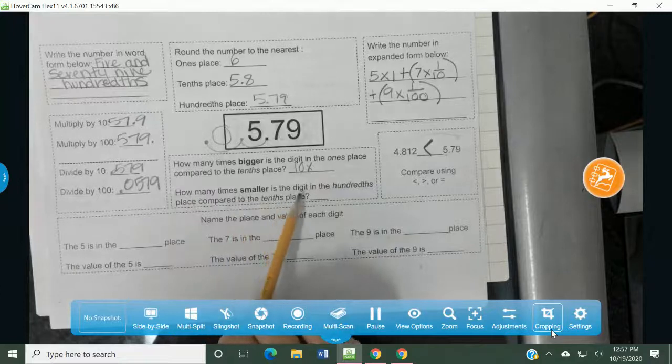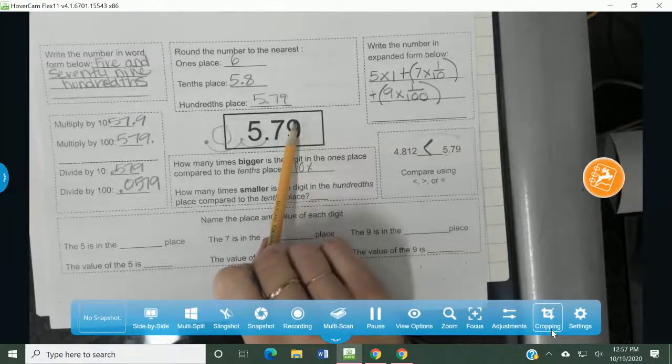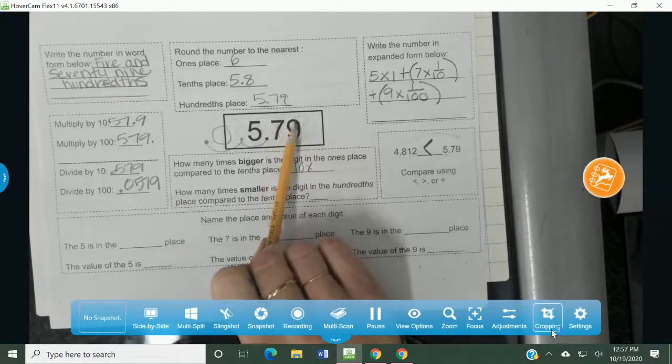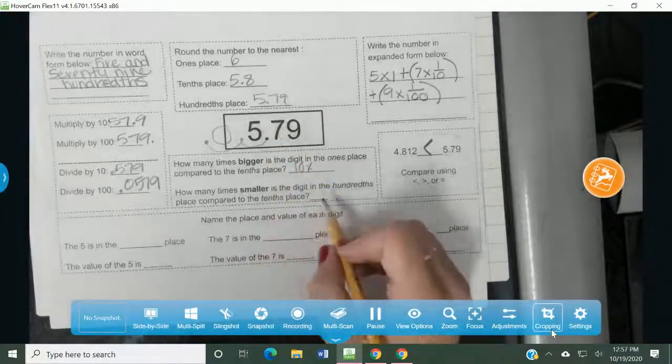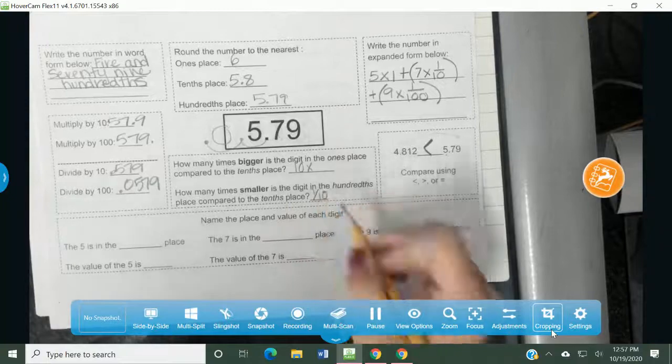How many times smaller is the digit in the hundredths place compared to this digit in the tenths place? Well, it's only one spot over, but because it's smaller and it's in the decimal area, we say it's one tenth.